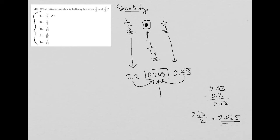So 1 half is equal to 0.5. So that's not it. 1 fourth is equal to 0.25. So close, but that's not it.